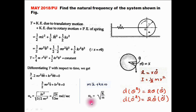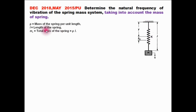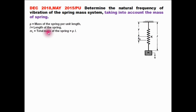Now we are going to derive the natural frequency of the spring-mass system by considering the mass of the spring. Let rho be the mass of the spring per unit length. If L is the total length of the spring, then the total mass of the spring ms equals rho times L. To determine the natural frequency, I am going to apply the energy method again.